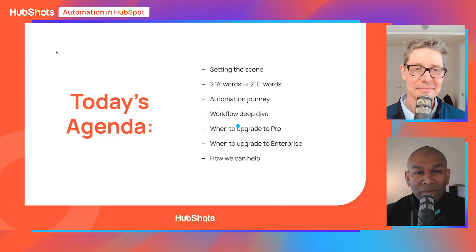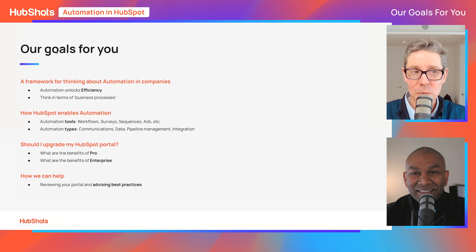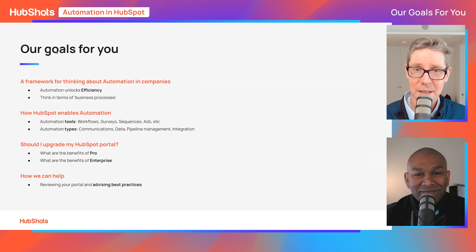Let's talk about the framework for thinking about automation. These are the goals we want viewers to get out of this session. We want you to be thinking about automation in terms of business processes and achieving efficiency. We also want to show you all the different areas that HubSpot can enable automation, and then answer the question: should I upgrade my HubSpot portal? We get this a lot from clients.